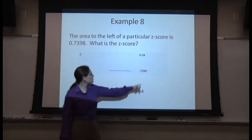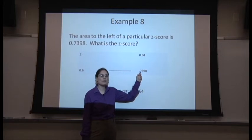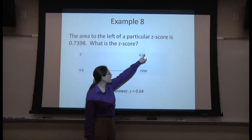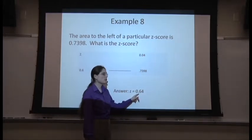We found 0.7389 near the top of the positive side. The row is 0.6. The column is 0.04. z equals 0.64.